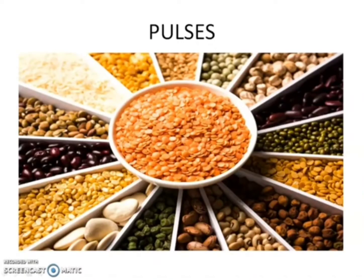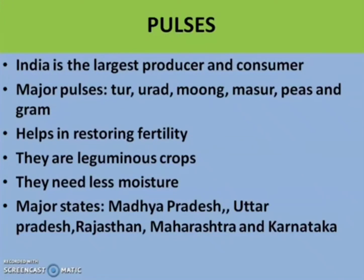The next crop is pulses. India is the largest producer as well as the consumer of pulses in the world. The major pulses grown in India are Tur, Mung, Masoor, Peas, etc. Pulses are very helpful in restoring the fertility of the soil, which is why they are also known as leguminous crops. They need less moisture. The major states are Madhya Pradesh, Uttar Pradesh, Rajasthan, Maharashtra and Karnataka.